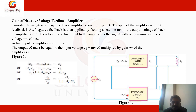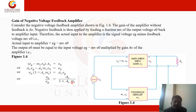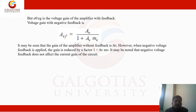As shown in the figure, the gain of the amplifier without feedback is Av. Negative feedback is applied by feeding a fraction mv of the output voltage E0 back to the amplifier input. The actual input to the amplifier is the signal Eg minus the feedback voltage mv·E0. Therefore: (Eg − mv·E0)·Av = E0, giving the closed-loop gain E0/Eg = Av / (1 + Av·mv). This term (1 + Av·mv) is sometimes called beta. The voltage gain with negative feedback is Av / (1 + Av·mv).